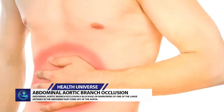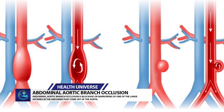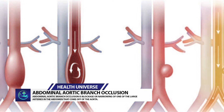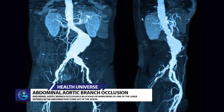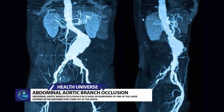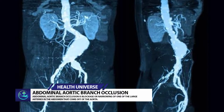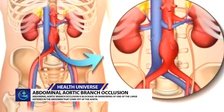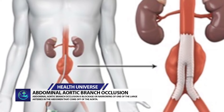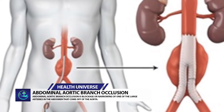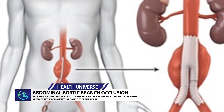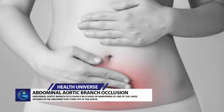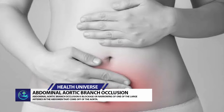Abdominal aortic branch occlusion is blockage or narrowing of one of the large arteries in the abdomen that come off of the aorta. Branches of the aorta can be blocked, occluded, due to atherosclerosis, abnormal growth of muscle in the artery's wall, fibromuscular dysplasia, blood clots, or other disorders.